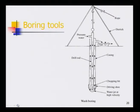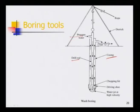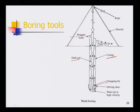Next is wash boring. The drill rod is inserted inside a casing pipe. Pressurized water is pumped through the drill rod by a water jet, and the rod is moved up and down with a chopping bit. The mixture of water and loosened soil comes out at the other end. A rope is used to manually pull and drop the drill rod, further loosening the soil with the driving shoe.